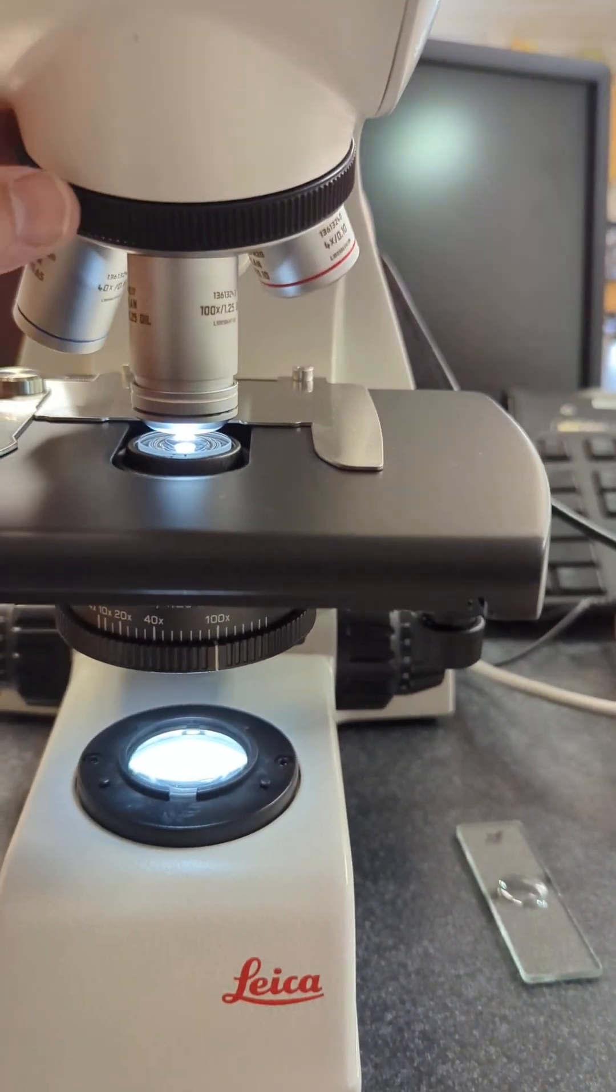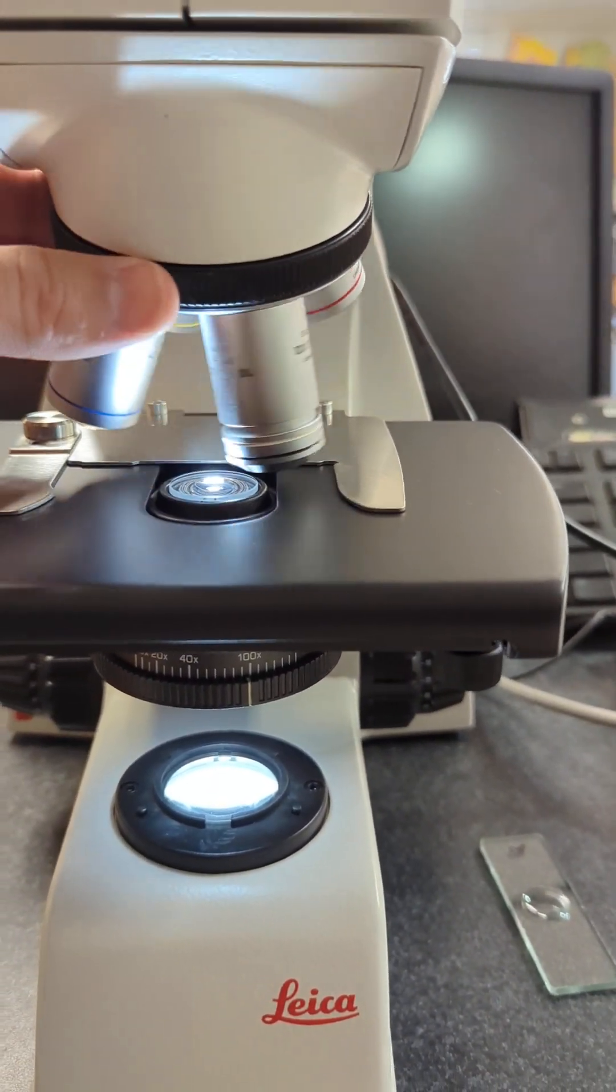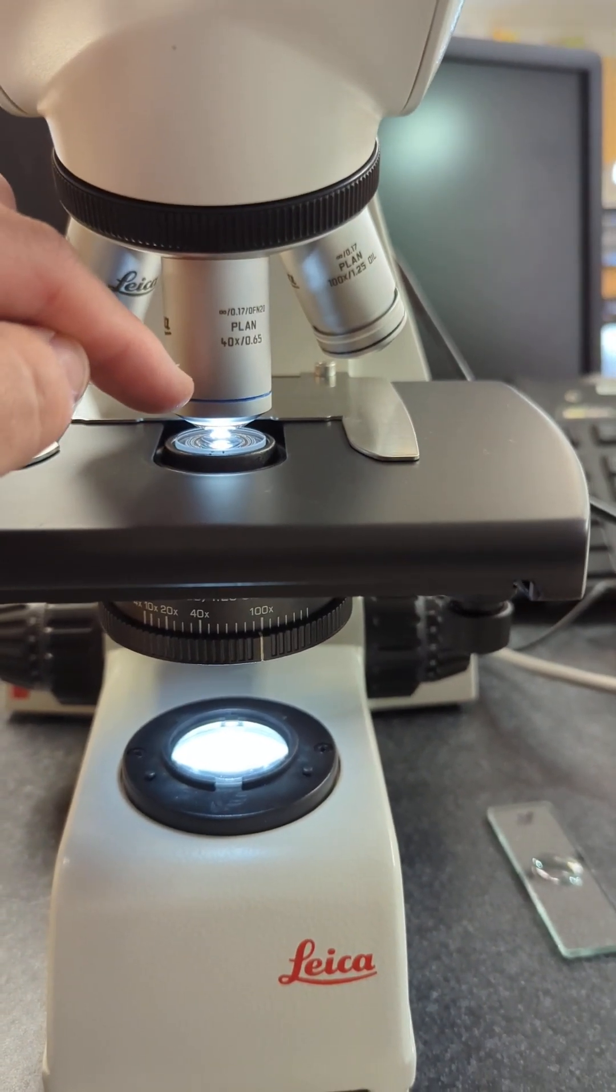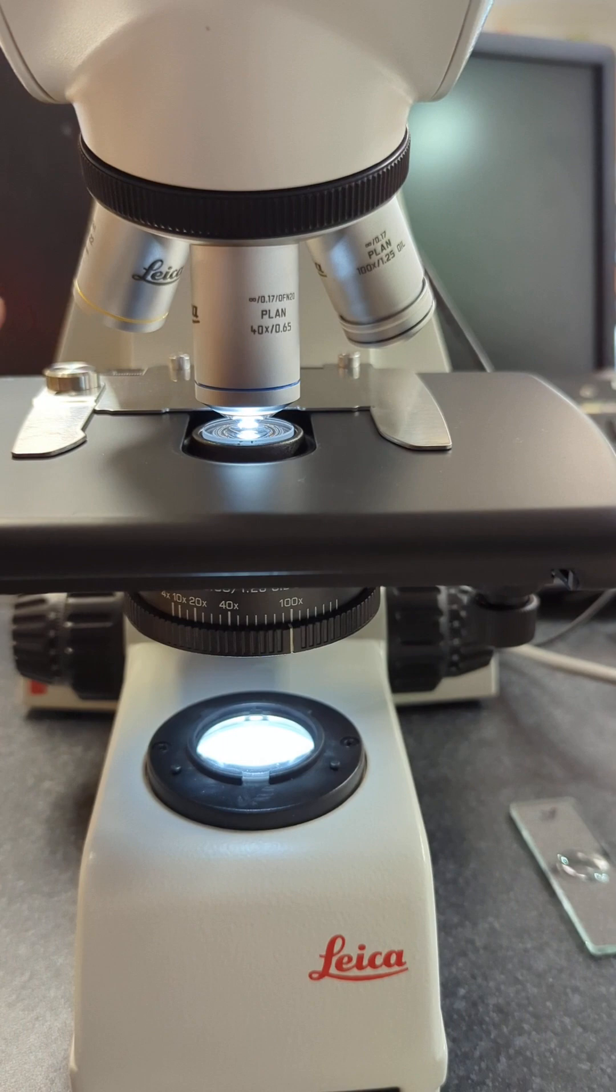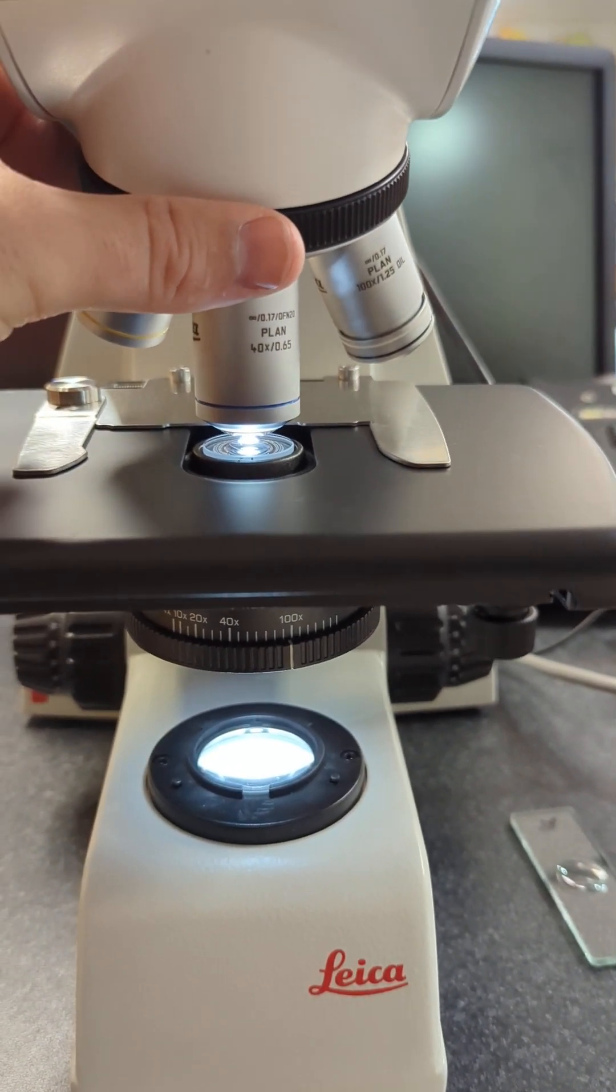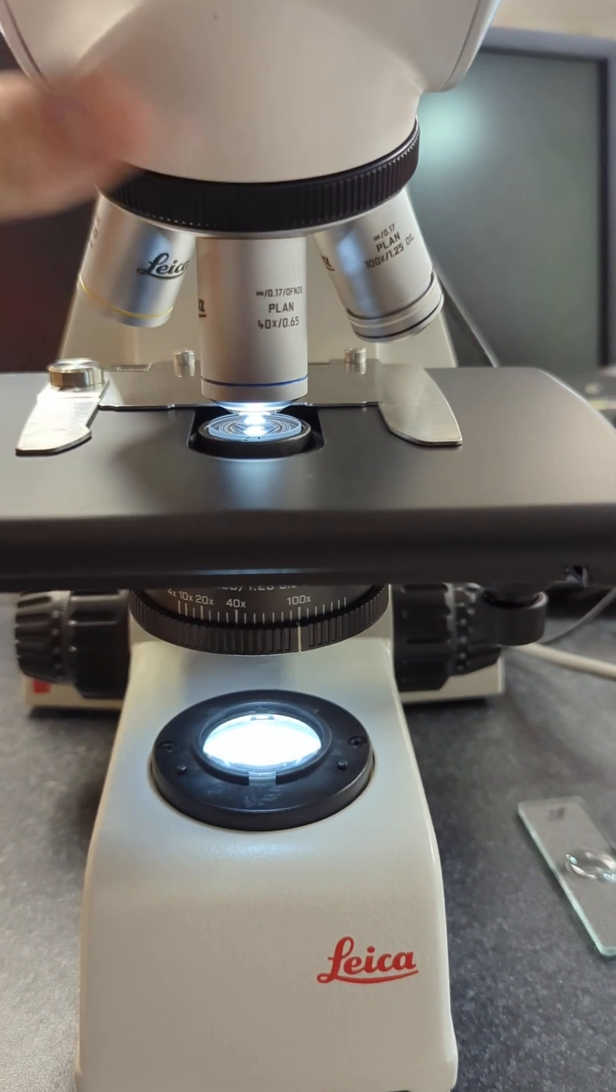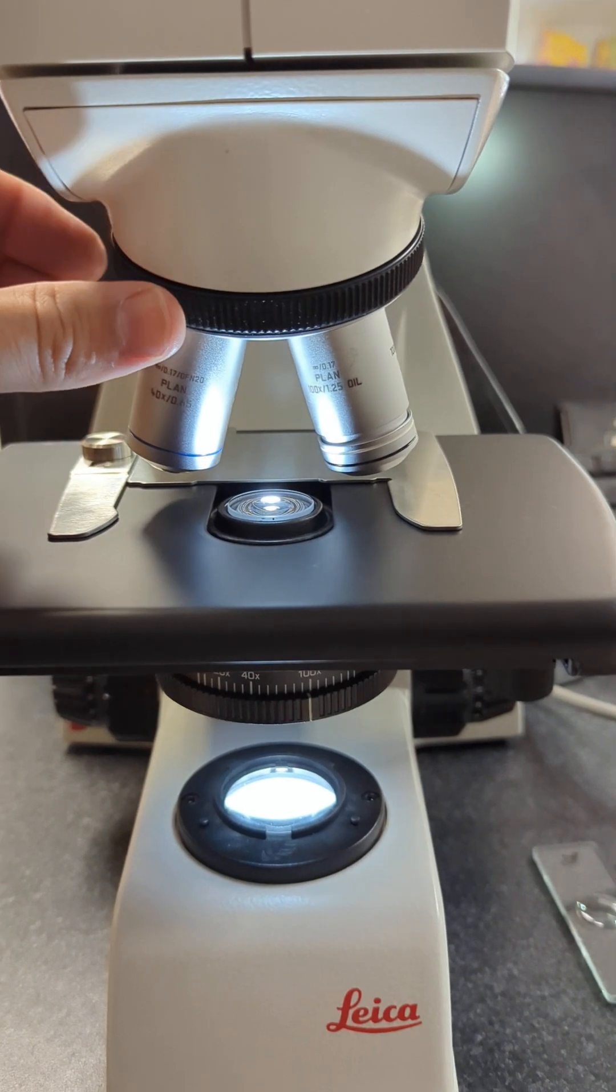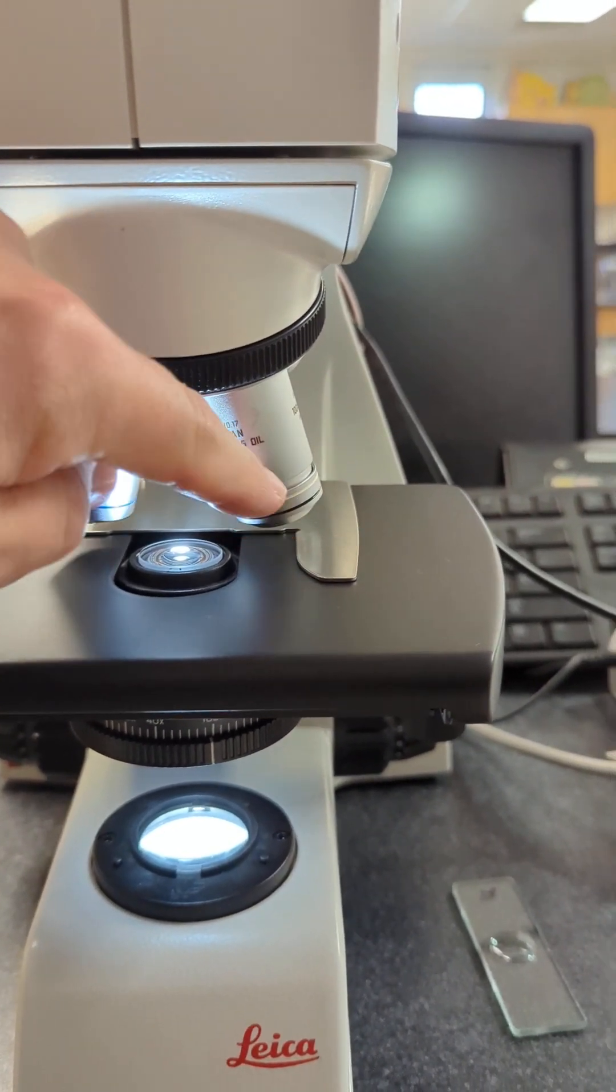Now if you switch back, just beware that this will swing into that oil droplet if you use the 40x. Many times the 40x gets dirty this way, and then it has to be completely cleaned to get that oil smudge off. Otherwise, it'll be a blurry lens for the next class. So always wipe your oil lens.